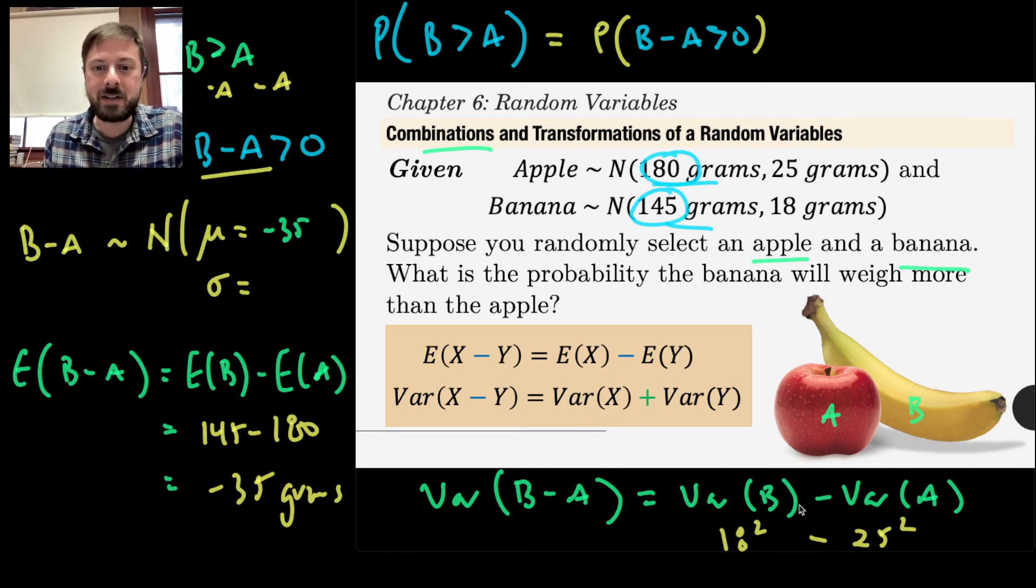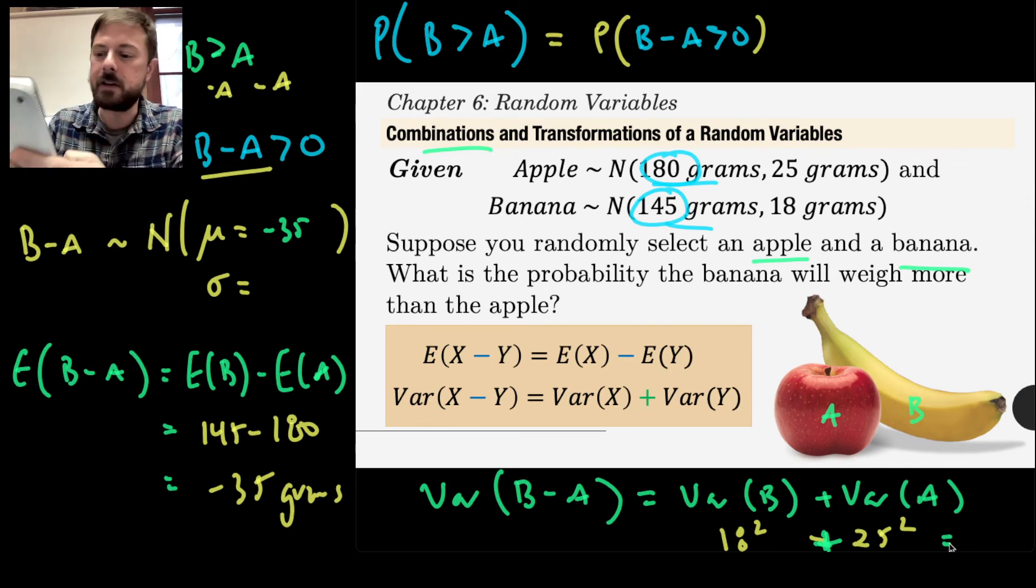So instead of subtracting the variances, I will still, once again, add them. I'll do 18 squared plus 25 squared. That will be my variance. And let me go to my handy calculator here. I'll do 18 squared plus 25 squared, and I got 949. You can see it right there.